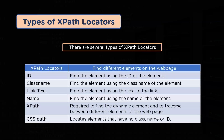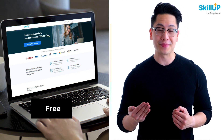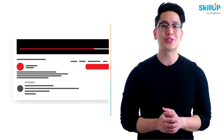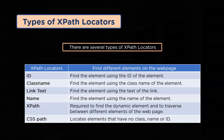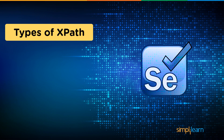The second type is the class name, where the class name of the element is used to find the element. The third type is the link text, where the link's text is used to find the element. All hyperlinks on the webpage can be identified just by using the link text. We can determine the link on the webpage with the help of an anchor tag, which is used to create hyperlinks, and the text between the opening and closing anchor tags constitutes the link text. Then comes the name locator, which uses the name of the element to find that particular element. The other type is XPath, required for dynamic elements and to traverse between different elements of the webpage. The last type is the CSS path, which locates elements that have no class, name, or ID.